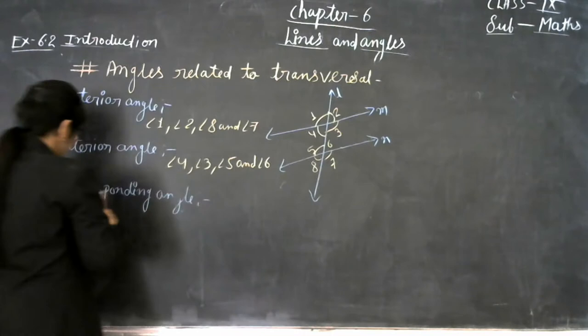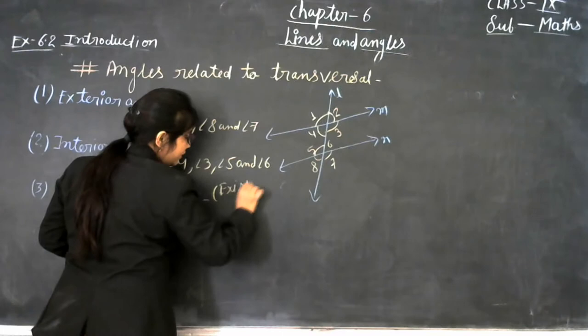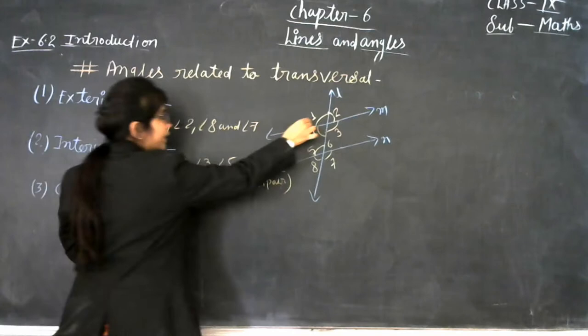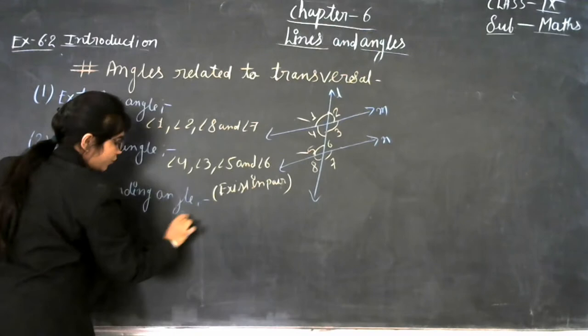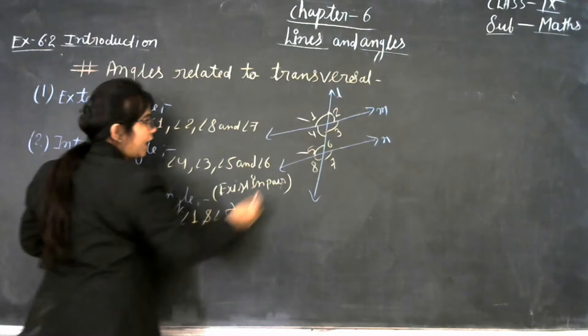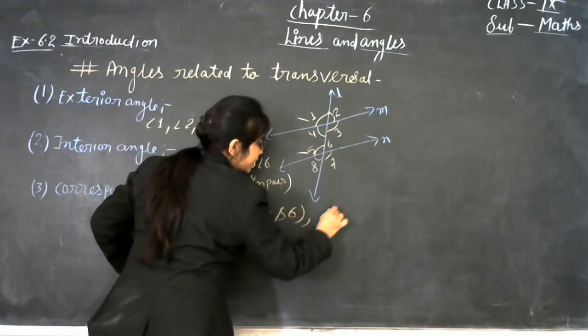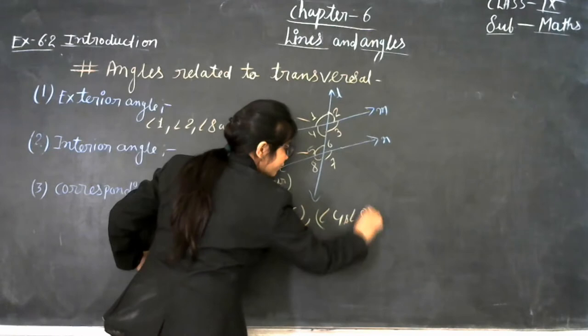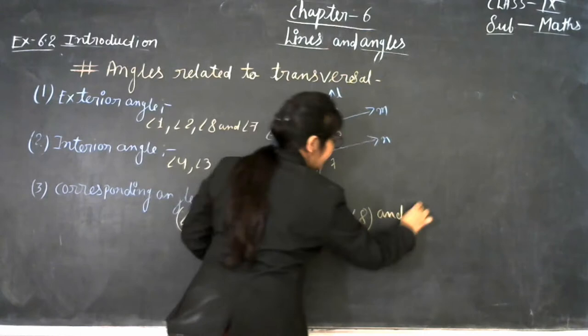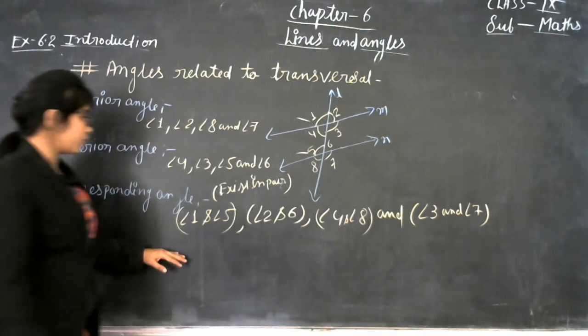The corresponding angle pairs are: first pair — angle 1 and angle 5; second pair — angle 2 and angle 6; third pair — angle 4 and angle 8; and the last pair — angle 3 and angle 7. These are the corresponding angles.